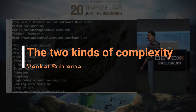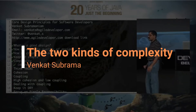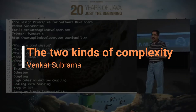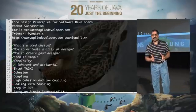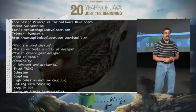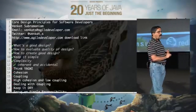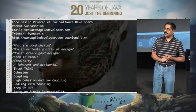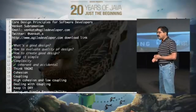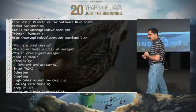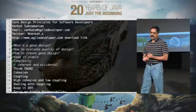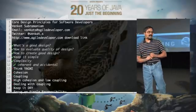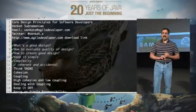What do we do in our daily lives? What we do mostly is we deal with complexity, and there are two kinds of complexities we have to deal with. One is inherent complexity and the other is accidental complexity.